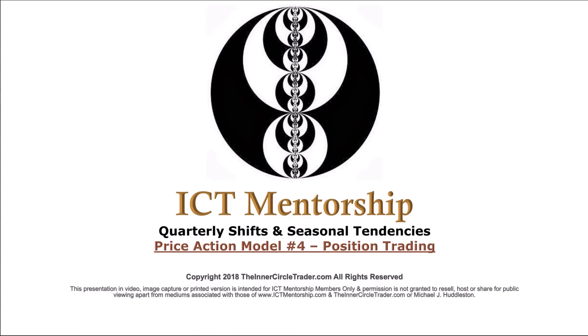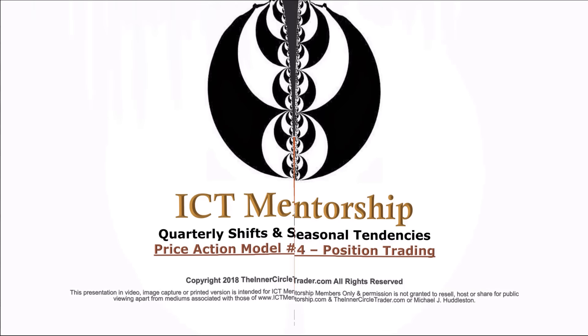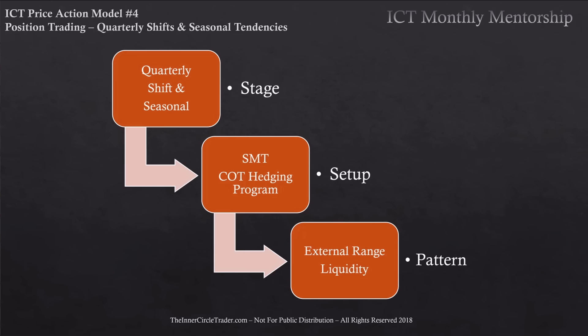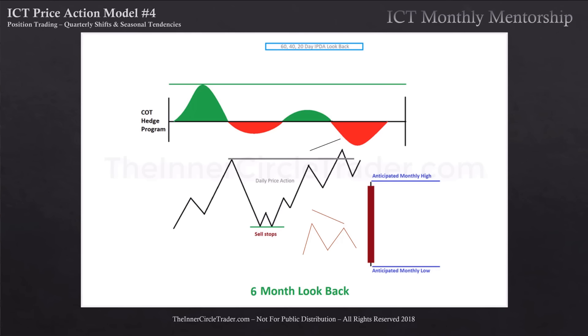Welcome back. This is Price Action Model Number Four: Position Trading — ICT Mentorship Quarterly Shifts and Seasonal Tendencies. The stage for this model is a quarterly shift, anticipating the effects of a quarterly shift in the majors overlapping with a seasonal tendency. The setup is a combination of SMT divergence and a commercial traders hedging program, and the pattern is external range liquidity.